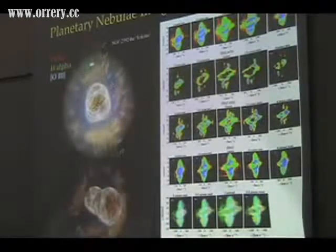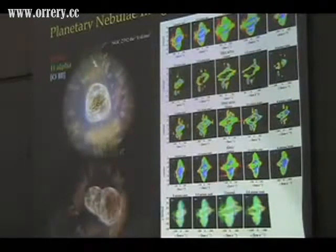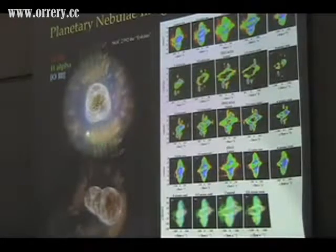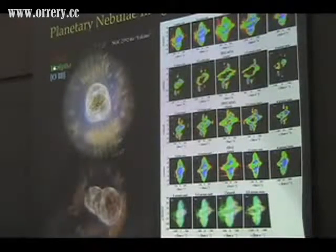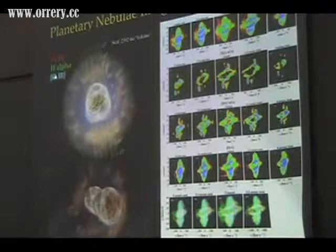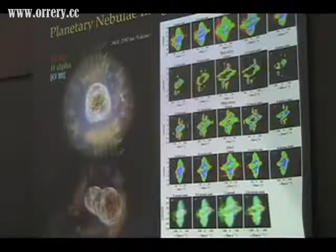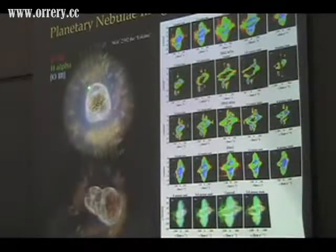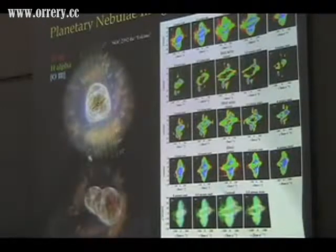And I had a student who modeled this nebula and used space telescope images in nitrogen, H-alpha hydrogen, and oxygen. And you can see it has a blue halo and many, many little filaments. Some are nitrogen strong and others are oxygen strong.